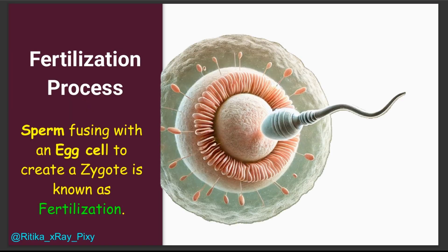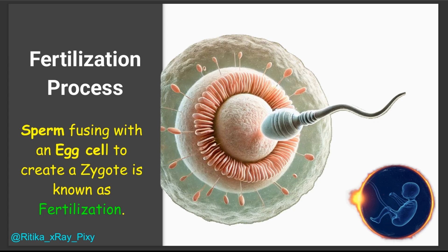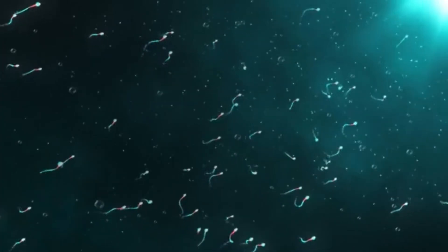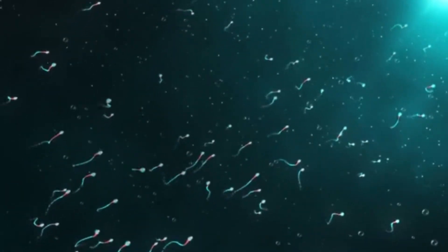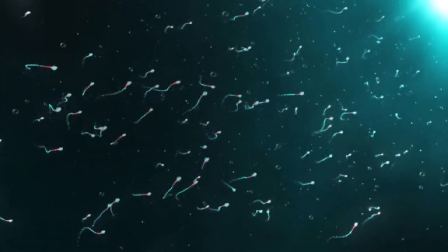In simple words, a sperm cell fusing with an egg cell to create a zygote is known as fertilization. This is the algorithm's main inspiration. The fertilization process is the first step in the creation of new life, where male sperm meets the female egg to form a baby. Millions of sperm race to find the egg, but only one lucky sperm successfully reaches and fertilizes it.